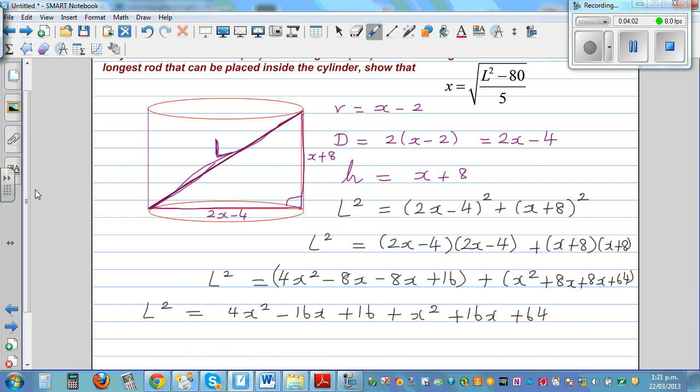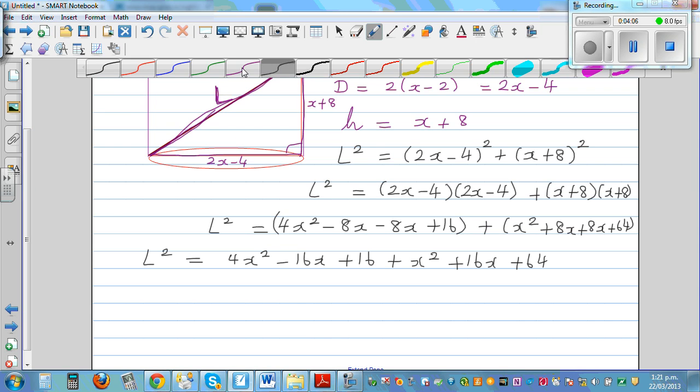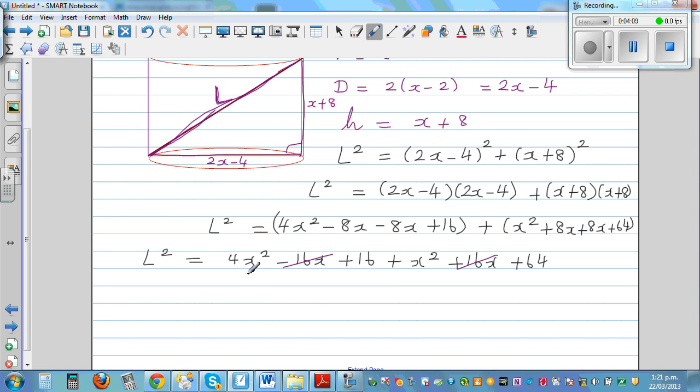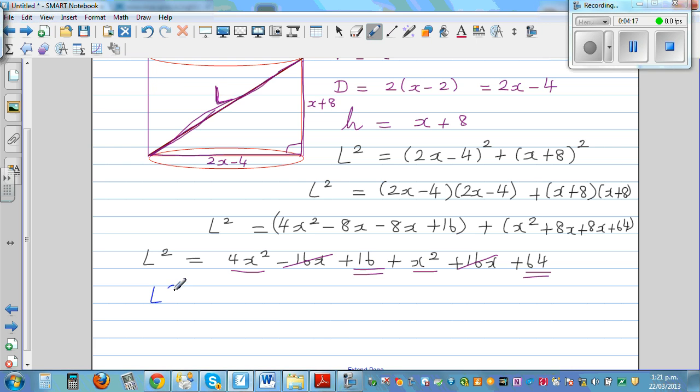So I hope you have understood this. What will get cancelled? Well, minus 16x and plus 16x gets cancelled. You can simplify these two, so L squared simplifies to 5x squared plus 80.